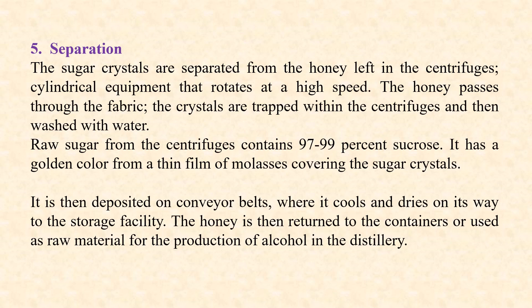After crystallization, the important step is separation of the sugar crystals, which is carried out by the process of centrifugation. Centrifugation is the separation of sugar crystals from adhered molasses, carried out using cylindrical equipment that rotates at high speed. The molasses passes through the fabric and the crystals are trapped within the centrifuges and then washed with water. The raw sugar obtained from centrifuges contains 97 to 99 percent sucrose and has a golden color from a thin film of molasses covering the sugar crystals.